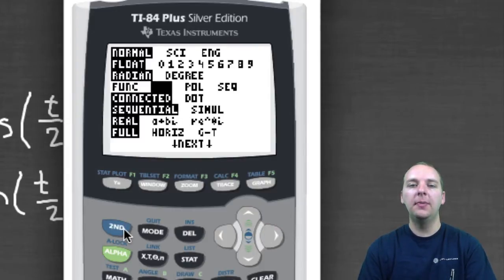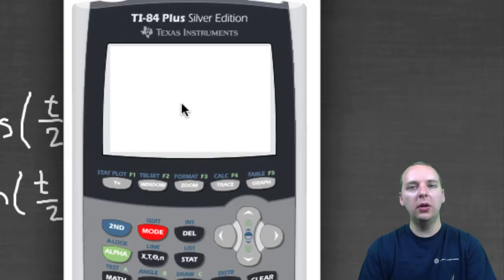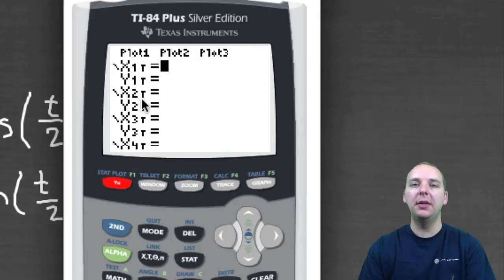And when you push enter, the main screen won't look any different, but when you go to Y equals, you'll notice that it's now accepting parametric input as opposed to rectangular input. You have X's and Y's, and when you even push the variable button that used to be X, it now has T's instead of X's. So that's changed as well.